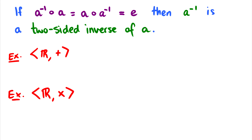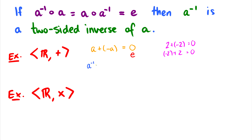If the operation is commutative, we just say that A_inverse is a two-sided inverse of A. With addition, A plus negative A gives us zero — zero being the identity element — and this holds for any number A. More concretely, two plus negative two equals zero, and negative two plus two equals zero. So under addition, A_inverse is simply negative A.